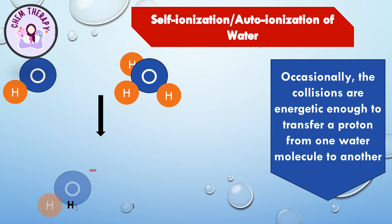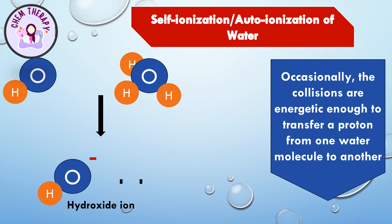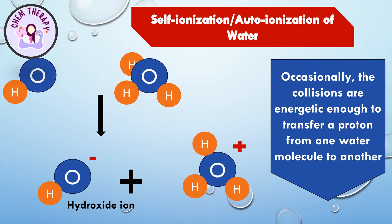The water molecule from which a proton is released as a result of ionization gets transformed into a hydroxide ion. The other water molecule in which a proton is added as a result of collision gets converted into a hydronium ion.